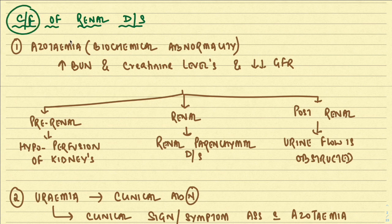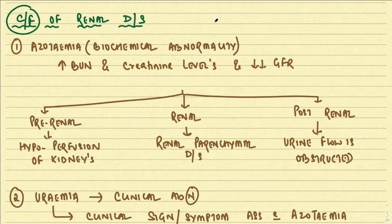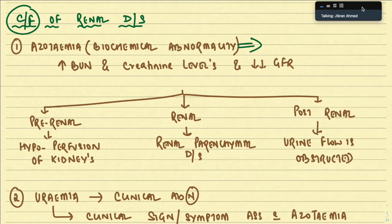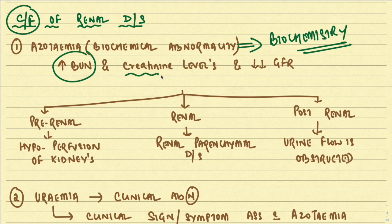The clinical features of renal disease: number one is azotemia. Azotemia is a biochemical abnormality characterized by an increase in blood urea nitrogen and creatinine levels, with a decreased GFR.